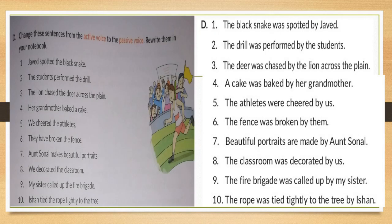See here with answers. 'Javid spotted the black snake.' Here we have 'spotted' — it's past simple. As I explained, in passive voice we apply 'was/were + V3rd.' According to this, the answer is: 'The black snake was spotted by Javid.' Your subject will become object and object will become subject in passive voice.